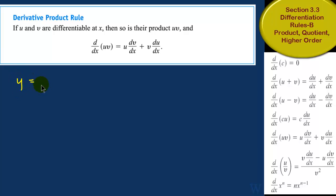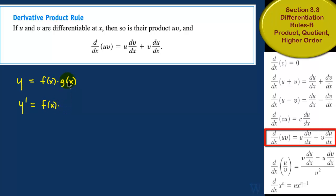Say I have y equal to the function f of x times g of x. By the product rule, y prime says that I'll take f of x and multiply with the derivative of the other function, plus f prime of x times g of x — the derivative of the first times the second. Notice that it doesn't matter which order I take the derivative because it's just a sum.